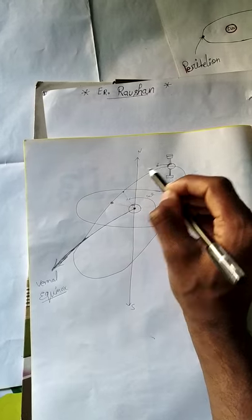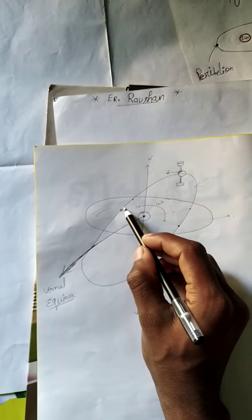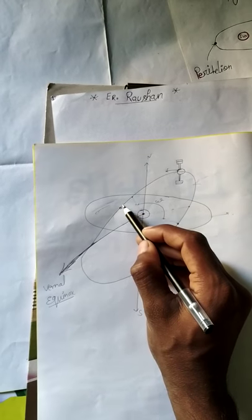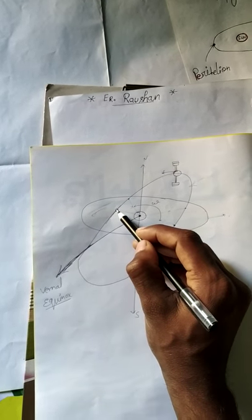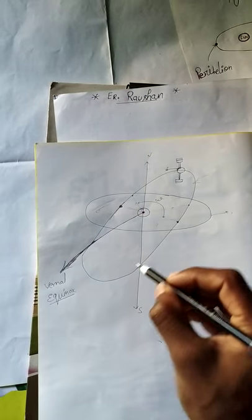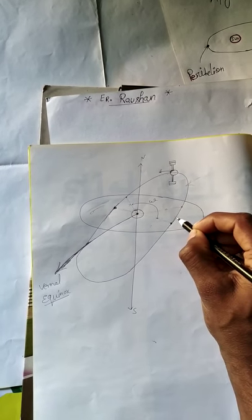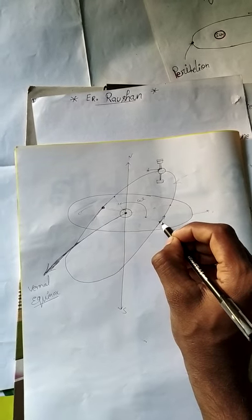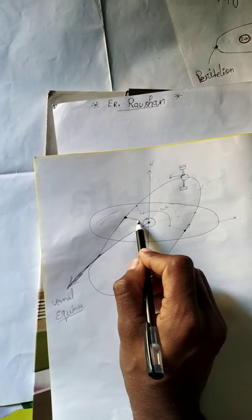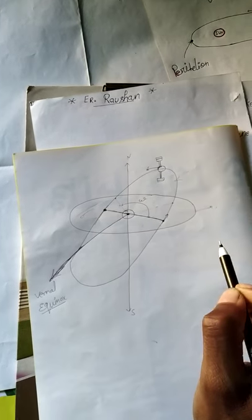The satellite moves in this direction, and when it crosses the equatorial plane going downward, that point is known as the descending node. When the satellite moves upward and crosses the equatorial plane, that point is known as the ascending node. When the descending node and ascending node are connected, that line is known as the line of node.